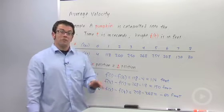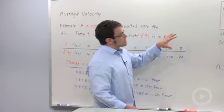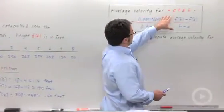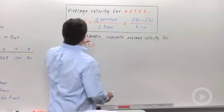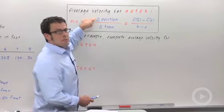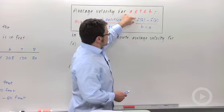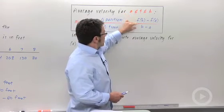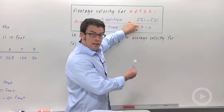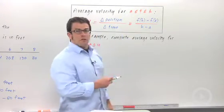So what does this have to do with average velocity? Average velocity over an interval from a to b is defined as the change in position divided by the change in time. And so what we were calculating just now were changes in position. If you divide that by the change in time, the length of the interval, you get the average velocity.